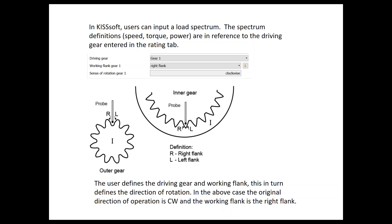As the probe is rotating, it's actually the right flank. You see the R and the L there for the probe for the outer gear and the inner gear. This probe is actually the rotating component here, and it's driving on this right flank. So the user — in this case the designer engineer — is defining the driving gear and the working flank, which in turn defines the direction of rotation.